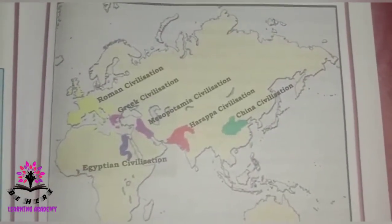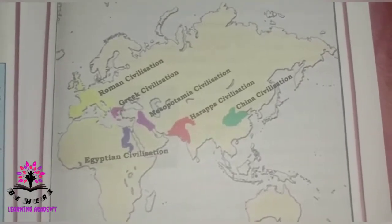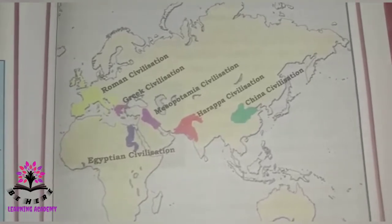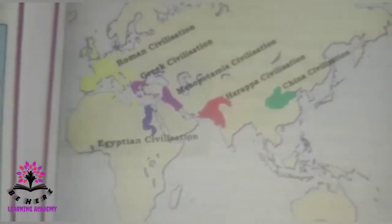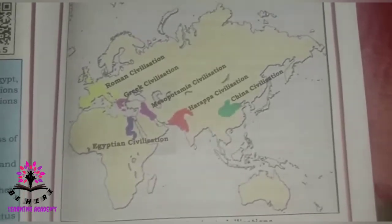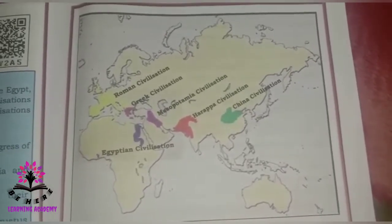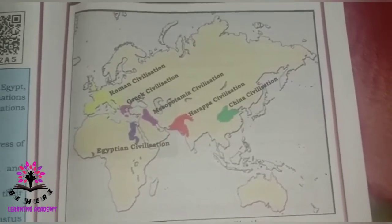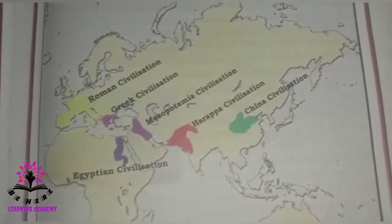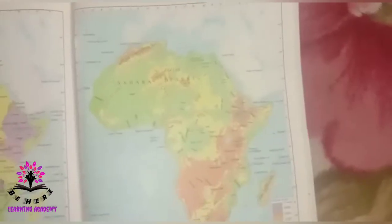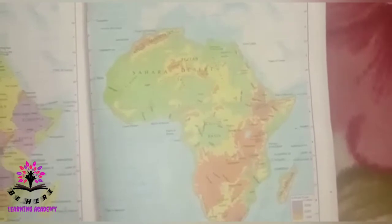In the map we see many civilizations, and the first civilization is the Egyptian civilization, which we shall learn about today. Prehistoric people settled on the banks of rivers, and later civilizations prospered there. The river banks became the cradles of ancient civilizations, so wherever there were rivers, these civilizations grew up and started settling there.